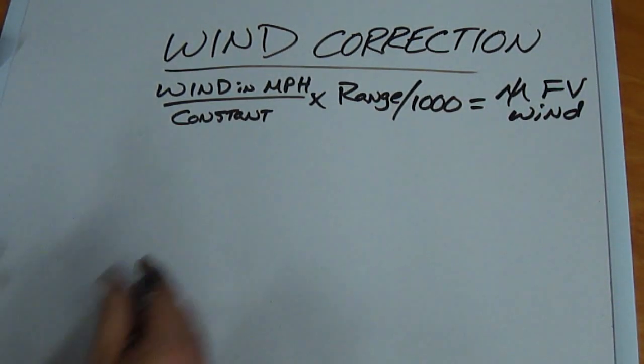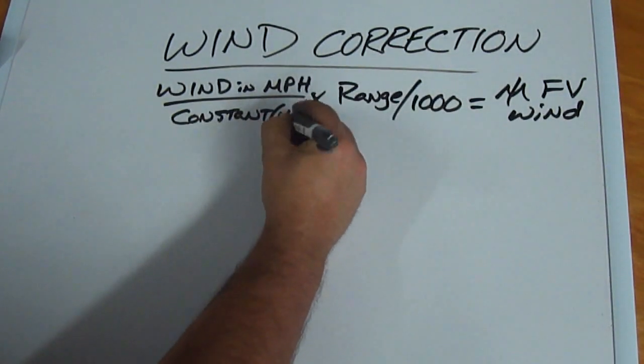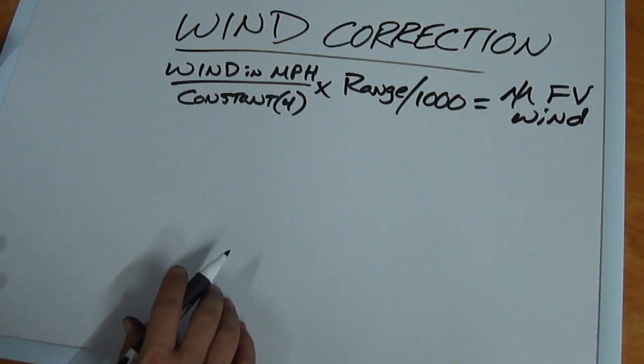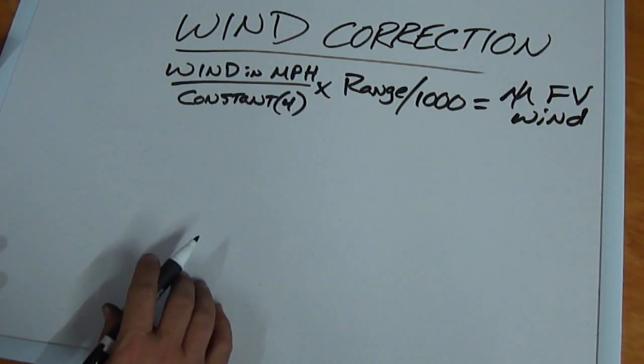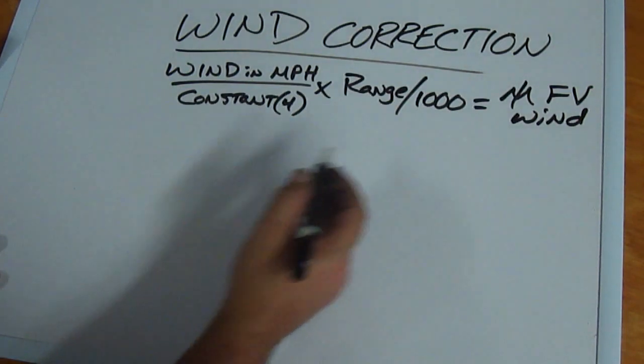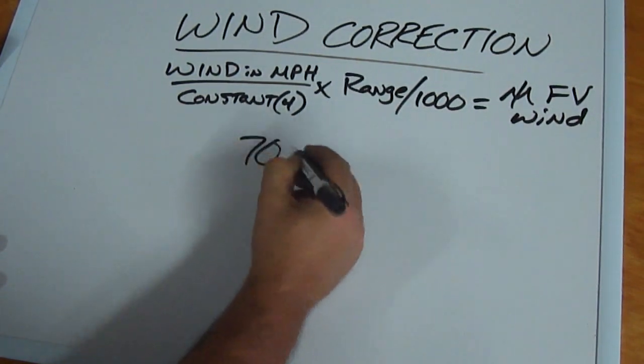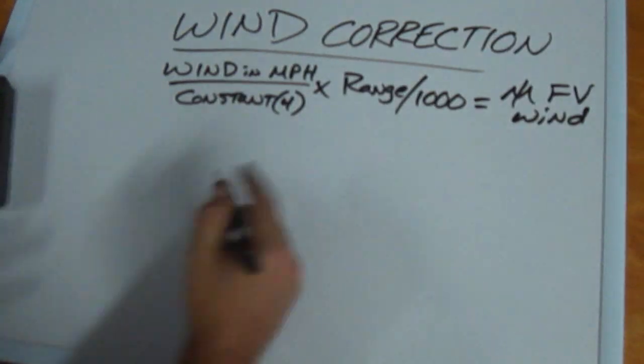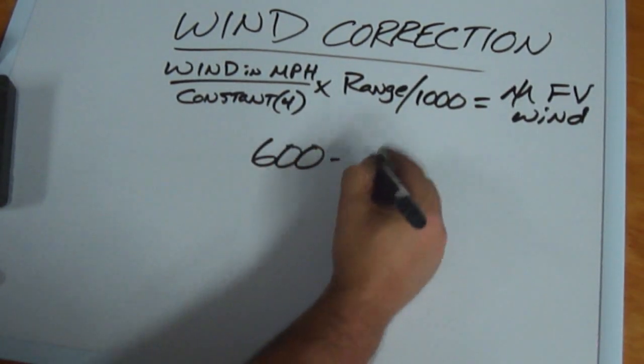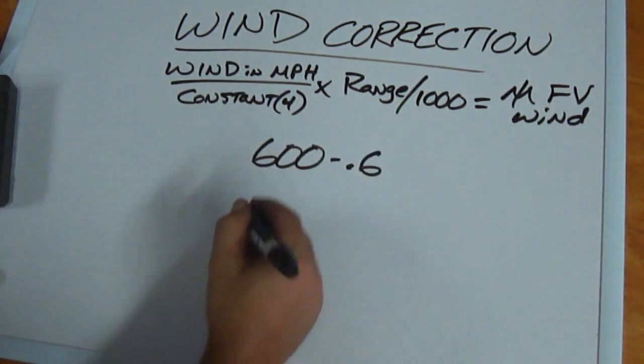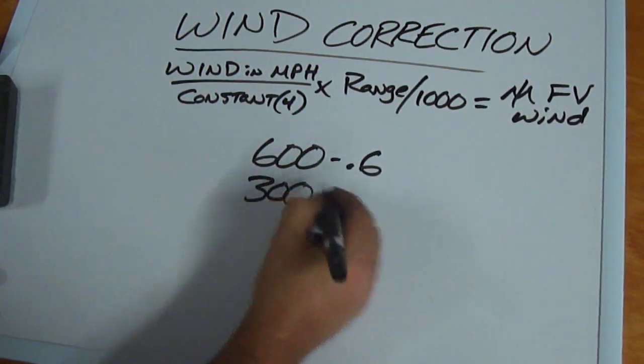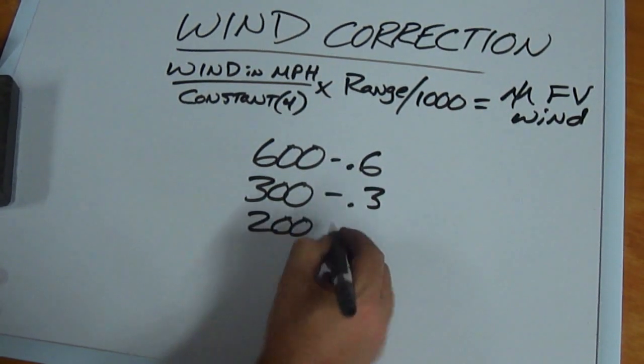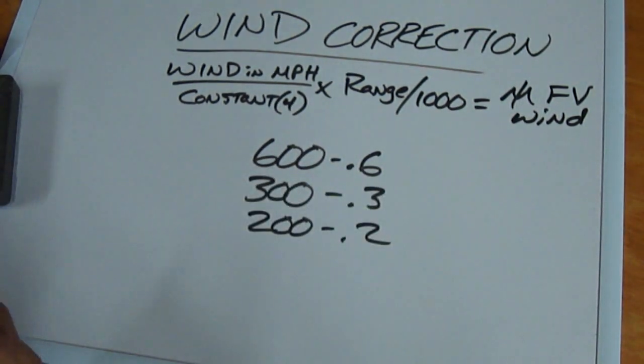We're going to pretend we're shooting a .308, so in this example our constant is going to be four. Our range divided by a thousand is the second part of this, so it's not as complicated as it seems. Basically if you're shooting at 700 yards, if you're shooting at 600 yards you're going to use .6. If you're shooting at 300 yards you're going to use .3, 200 yards .2. You can kind of see where we're going.